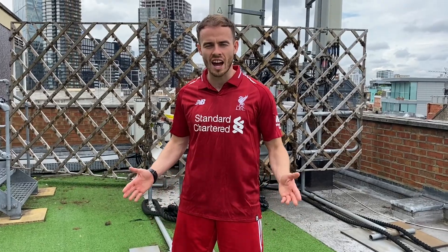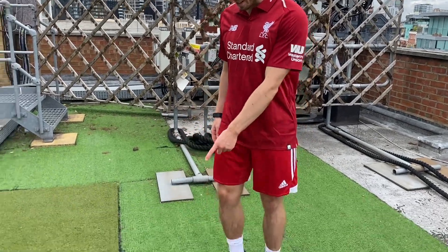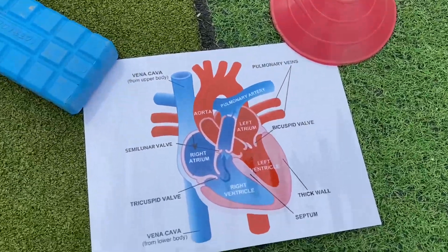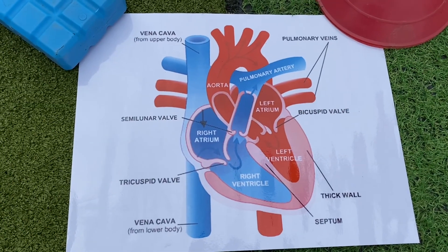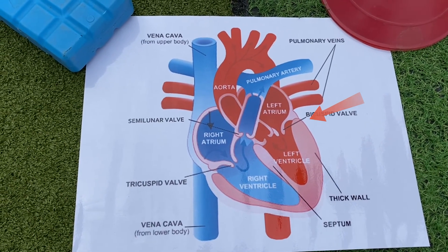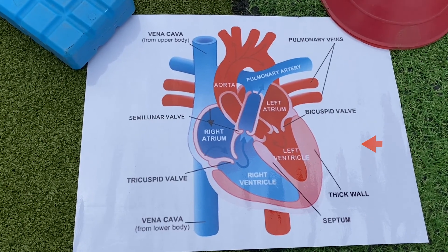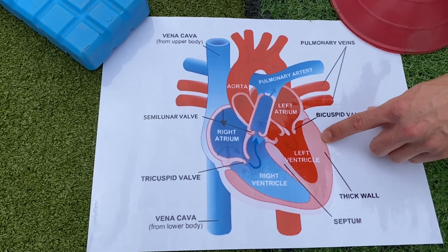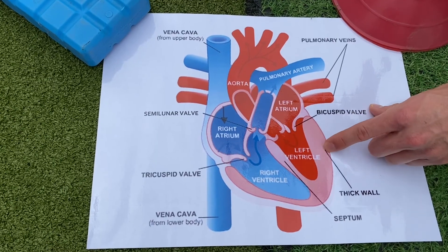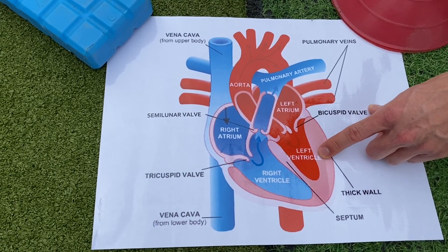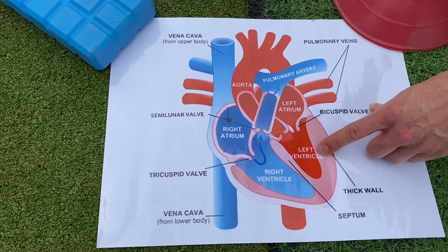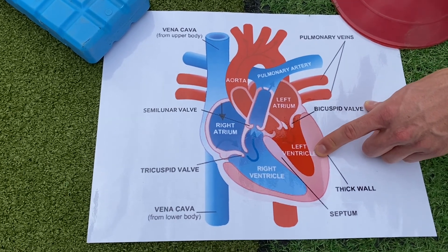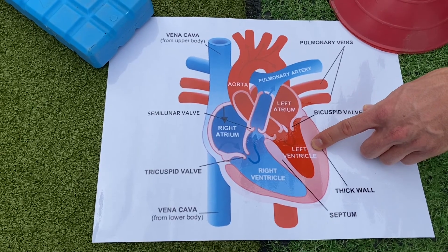Our journey continues — we now enter the pulmonary vein, which transports oxygenated blood to the left atrium. From the left atrium, this oxygenated blood passes through the bicuspid valve into the left ventricle. It's very important to recognise that the left ventricle has a thicker muscular wall, because the left side of the heart pumps oxygenated blood to the rest of the body, so it needs to be strong and powerful in order to eject that blood over a longer distance.